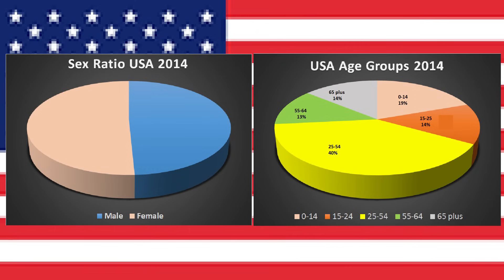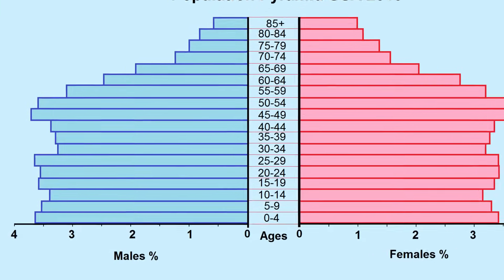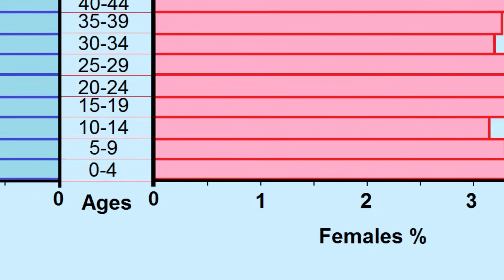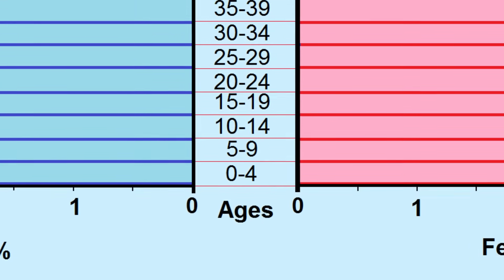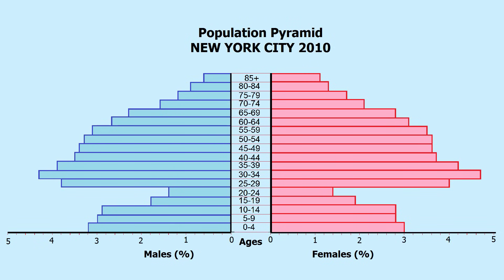The term population structure refers to the composition of a population. The population structure of a country is usually shown using a population pyramid — a graphical representation that shows the distribution of various age groups and gender. The male population is represented on the left-hand side and females on the right. Age groups are arranged in five-year intervals beginning with zero to four years old, followed by five to nine, and so on. Population pyramids can also be used to show the population structure for cities and towns.